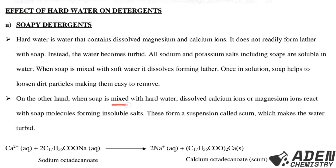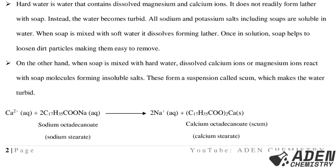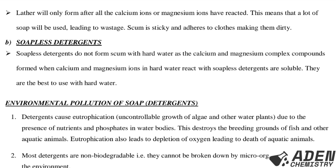On the other hand, when soap is mixed with hard water, dissolved calcium or magnesium ions react with soap molecules to form insoluble salts called scum. The equation shows calcium ions in hard water reacting with sodium octadecanoate (sodium stearate) to produce sodium ions in solution and calcium octadecanoate (calcium stearate), which is the scum. Lather will only form after all the calcium and magnesium ions have reacted, meaning a lot of soap is wasted.